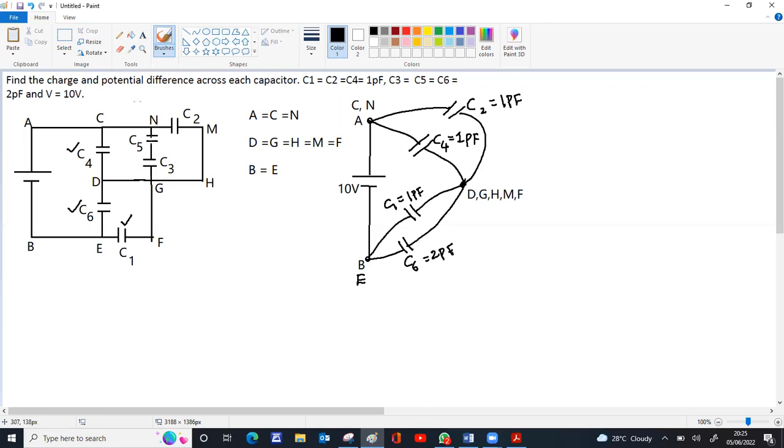So if you take C3 and C5 together as one single capacitor, C35. That is between N and G. N is here, G is here. So that capacitor also between N and G. This is C35. So these two are in series. 3 and 5 both are 2. So 2 and 2 series will be 1 picofarad.